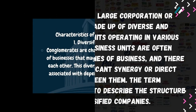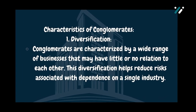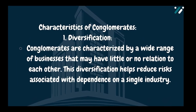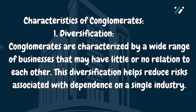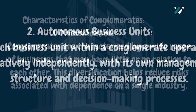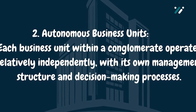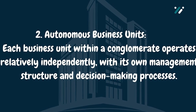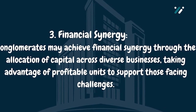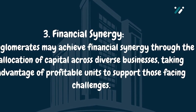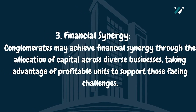Now the next topic is characteristics of conglomerates. Diversification: conglomerates are characterized by a wide range of businesses that may have little or no relation to each other. This diversification helps reduce risks associated with dependence on a single industry. Autonomous business units: each business unit within a conglomerate operates relatively independently with its own management structure and decision-making processes. Financial synergy: conglomerates may achieve financial synergy through the allocation of capital across diverse businesses, taking advantage of profitable units to support those facing challenges.